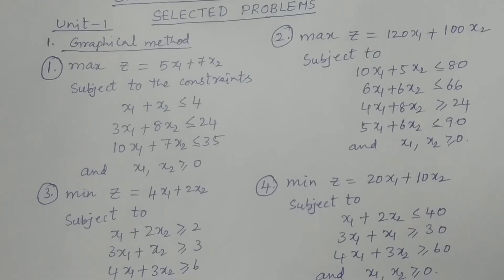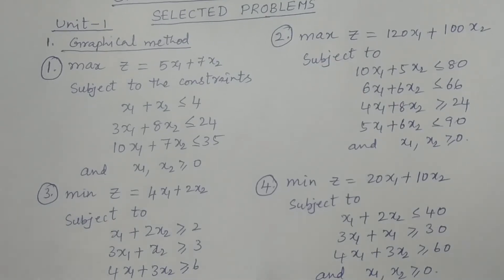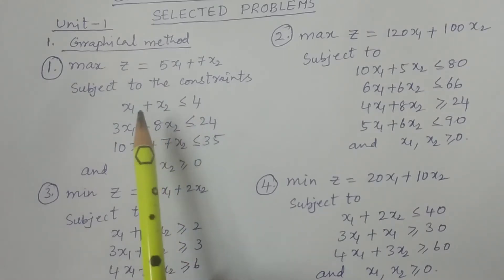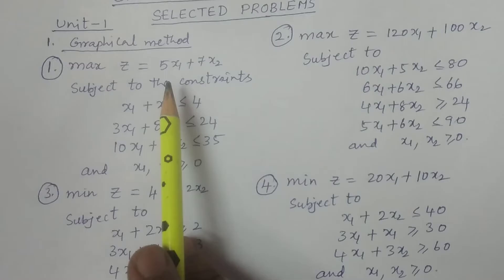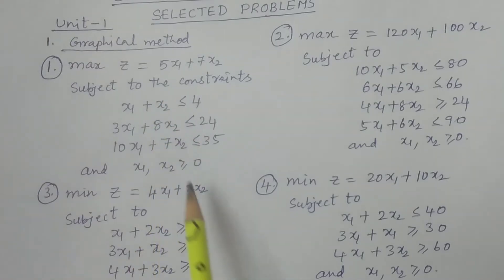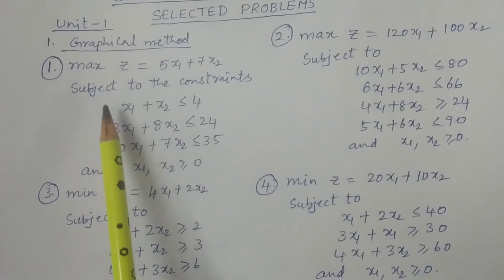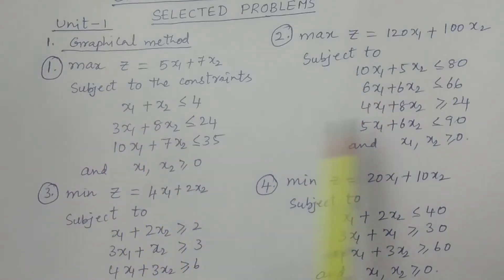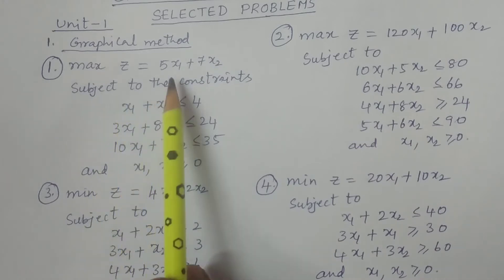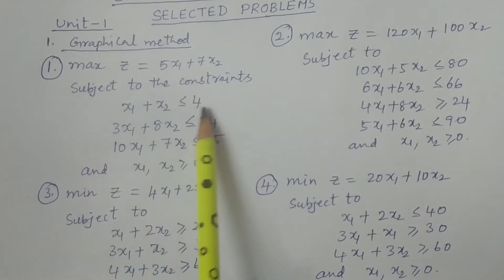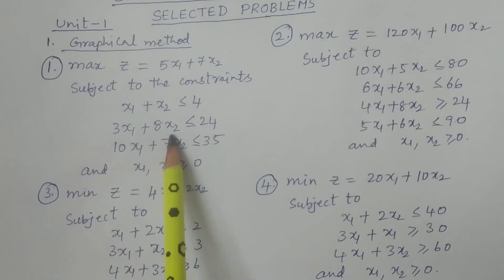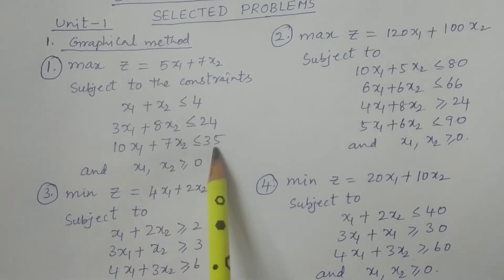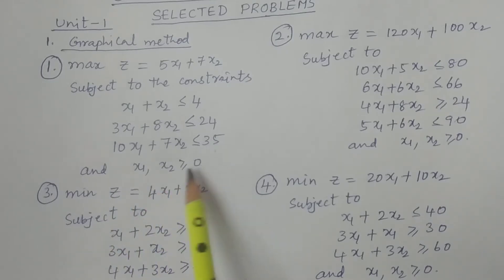Unit 1 is Operations Research, in which we are going to discuss the graphical method of solving the linear programming problem. In maximization, I have given two particular problems here. The first one: maximize z = 5x1 + 7x2, subject to constraints x1 + x2 ≤ 4, 3x1 + 8x2 ≤ 24, 10x1 + 7x2 ≤ 35, and x1, x2 ≥ 0.